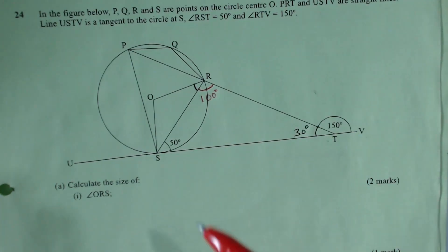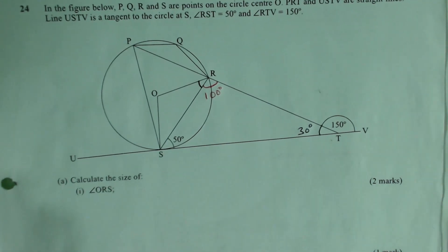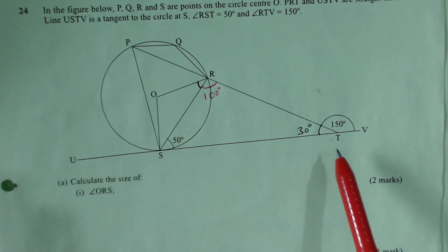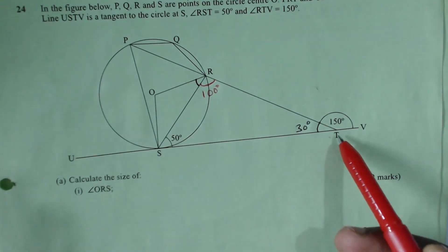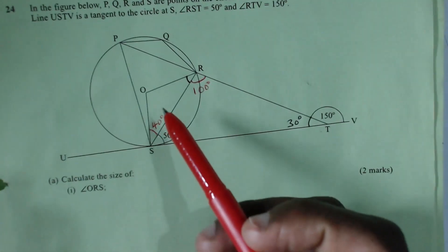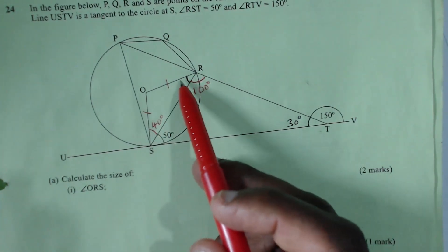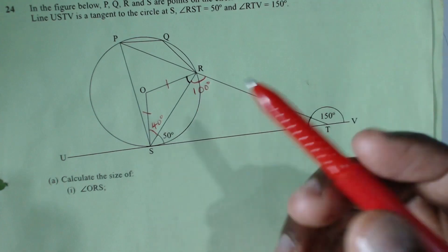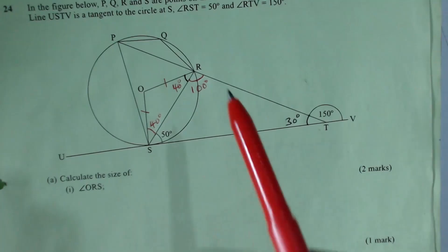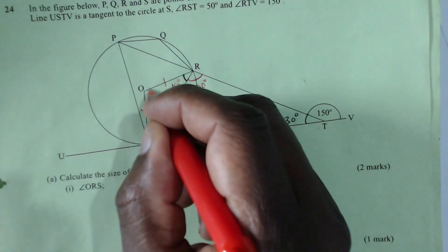Since USTV is a tangent and OS is a radius, the tangent-radius property gives angle OST equals 90 degrees. With angle RST equal to 50 degrees, the remaining angle OSR is 90 minus 50 equals 40 degrees. Now OS and OR are both radii, so triangle OSR is isosceles. The base angles are equal, so angle ORS also equals 40 degrees.